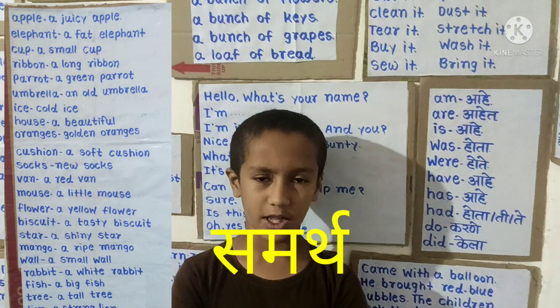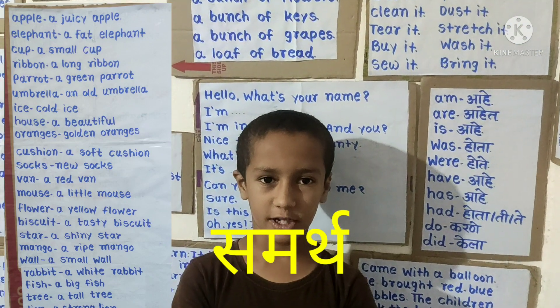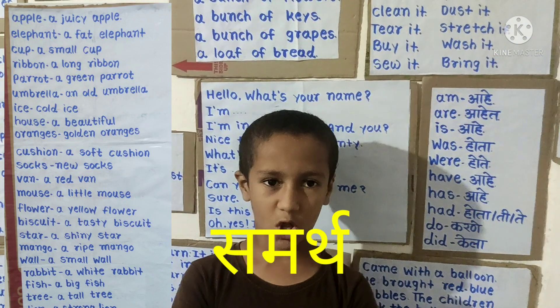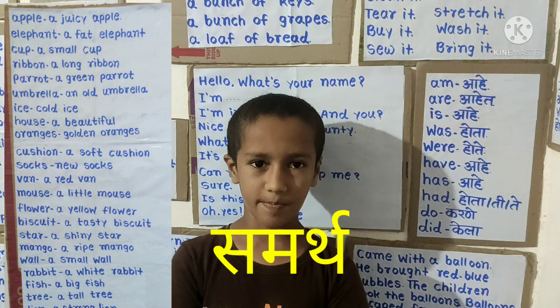Apple, a juicy apple. Elephant, a fat elephant. Cup, a small cup. Ribbon, a long ribbon.